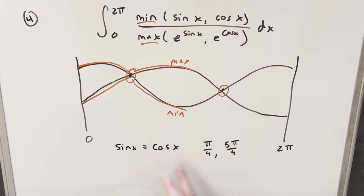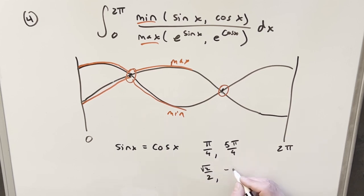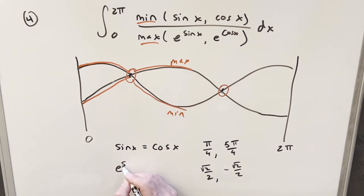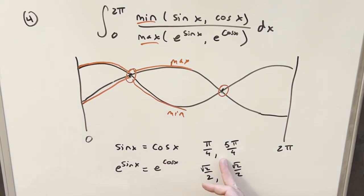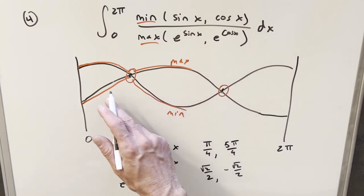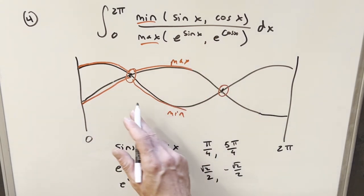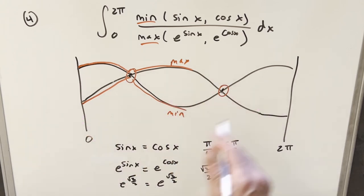At pi over four both values are one over square root of two, and at five pi over four they're both minus square root of two over two. Then we do the same for e to the sine x: where is e to the sine x equal to e to the cosine x? It turns out it's the exact same intersection points, which makes sense because we're just putting these values in the exponent. The min and max occur in the same places for both pairs of functions.